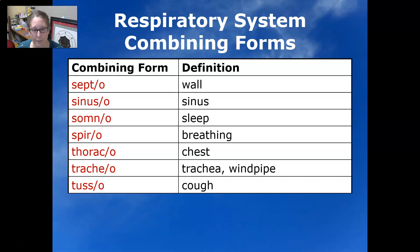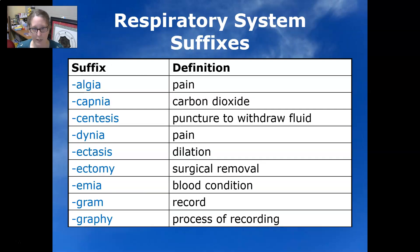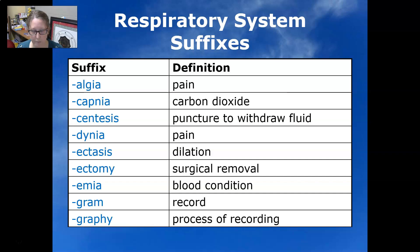Now let's look at our suffixes. Algia is pain. Capnea is carbon dioxide. Centesis is a puncture to withdraw fluid. Dynia is pain. Ectasis is dilation. Ectomy is surgical removal. Emia is a blood condition.